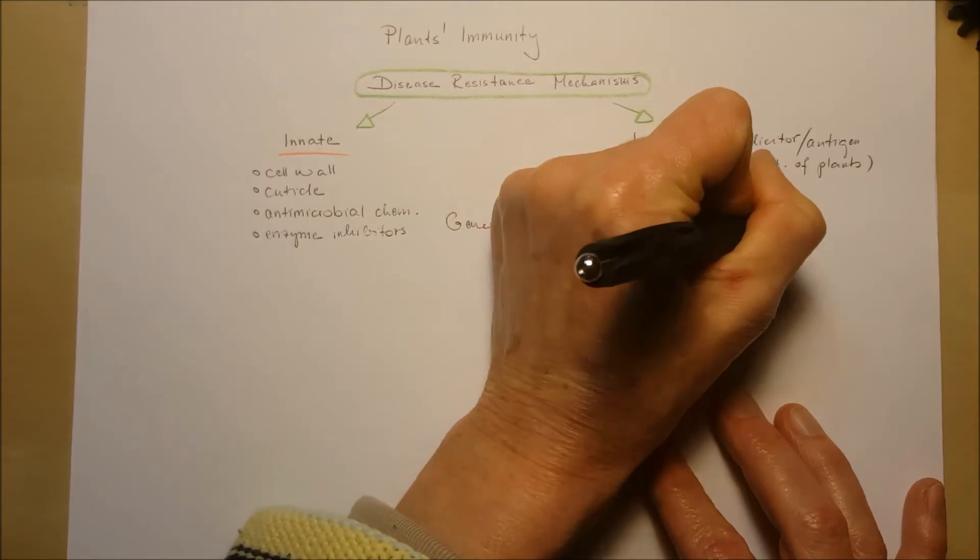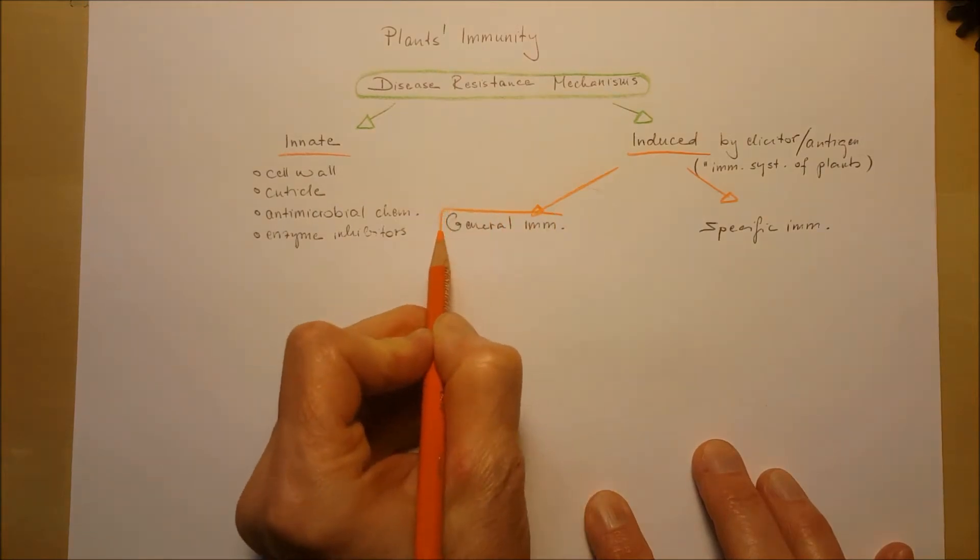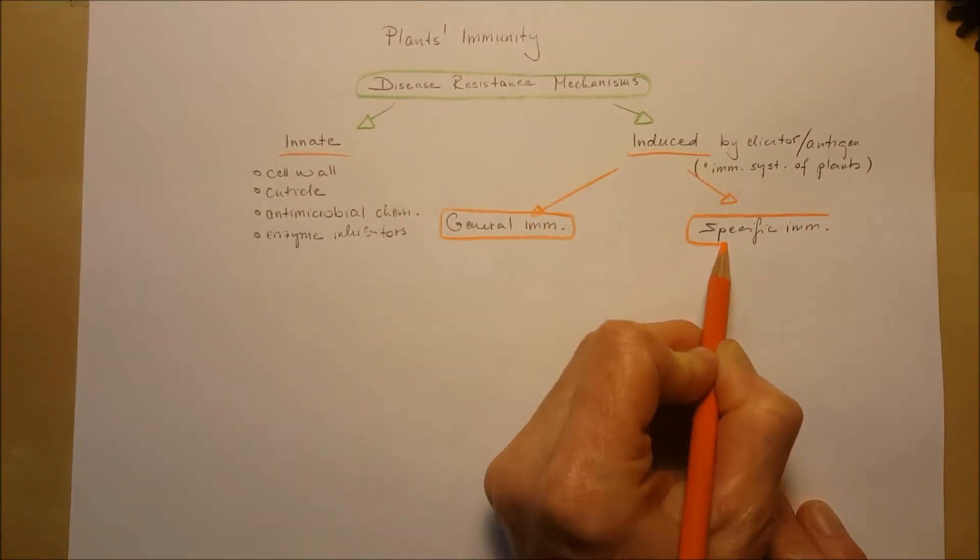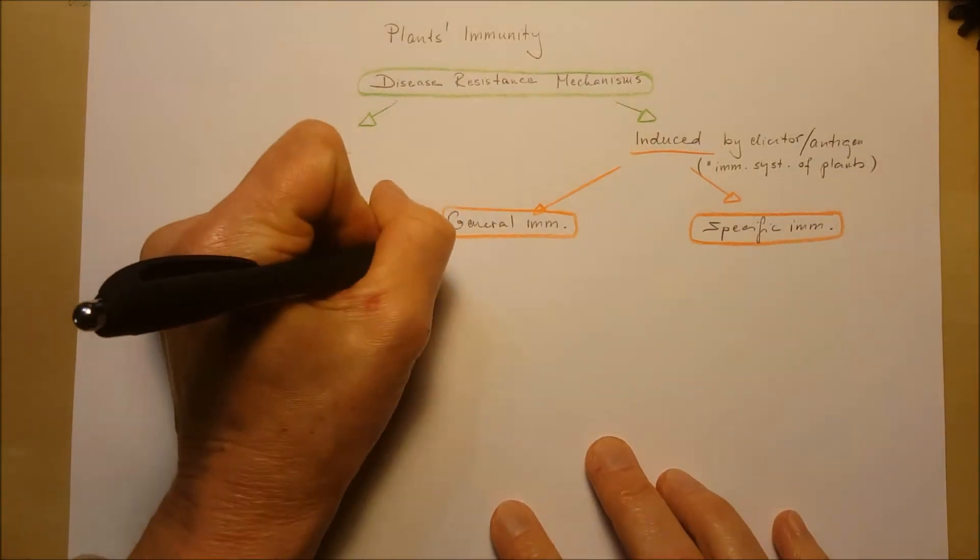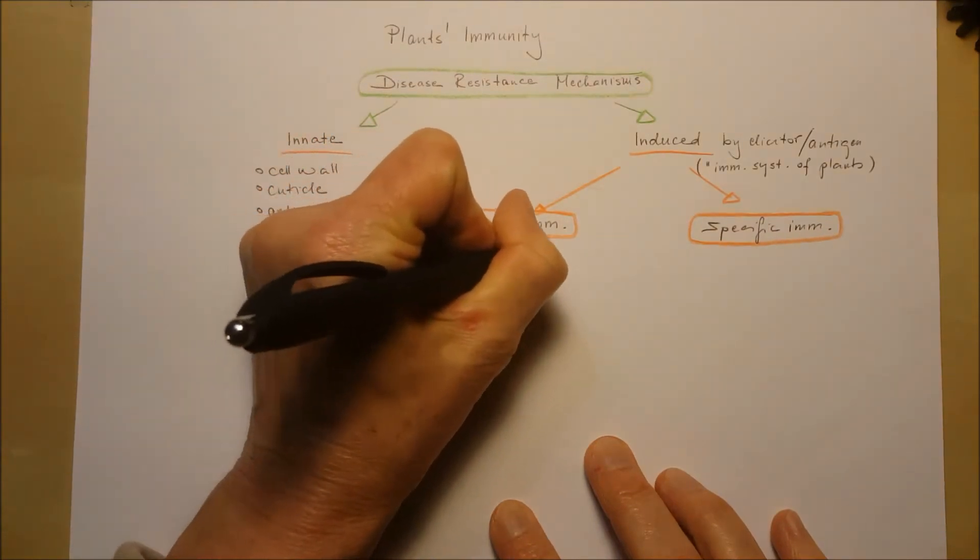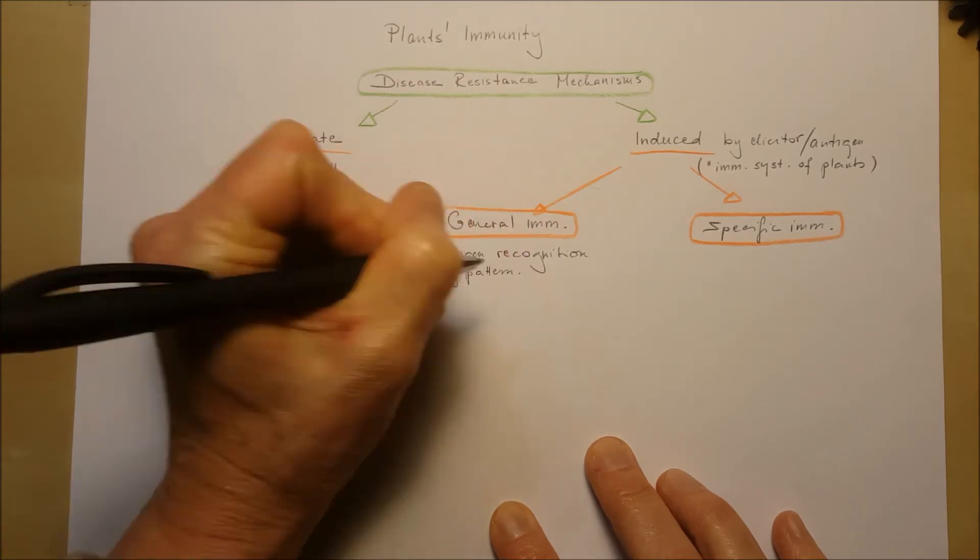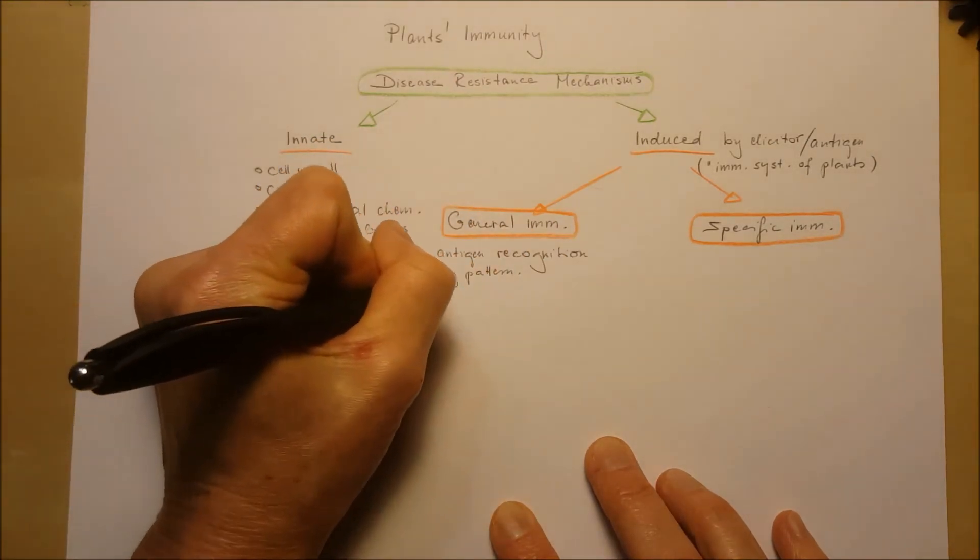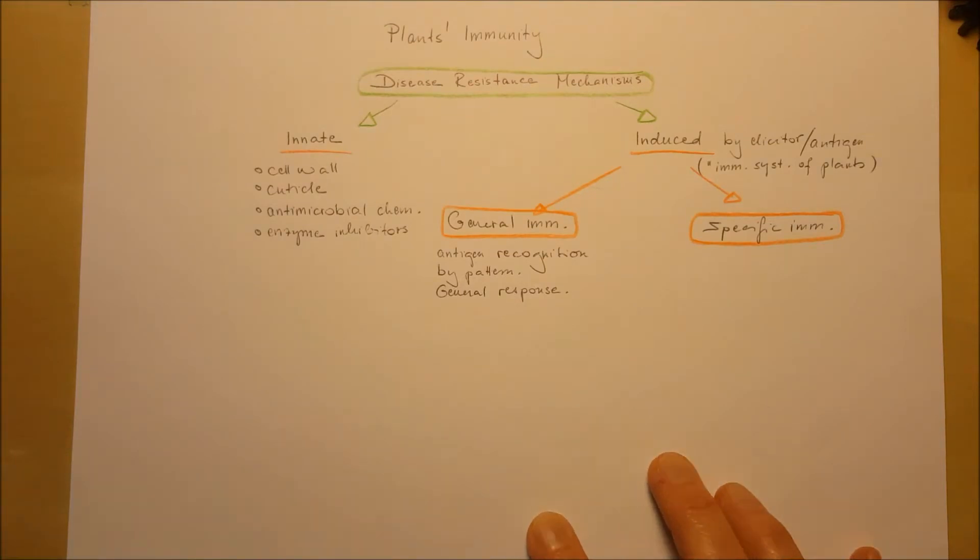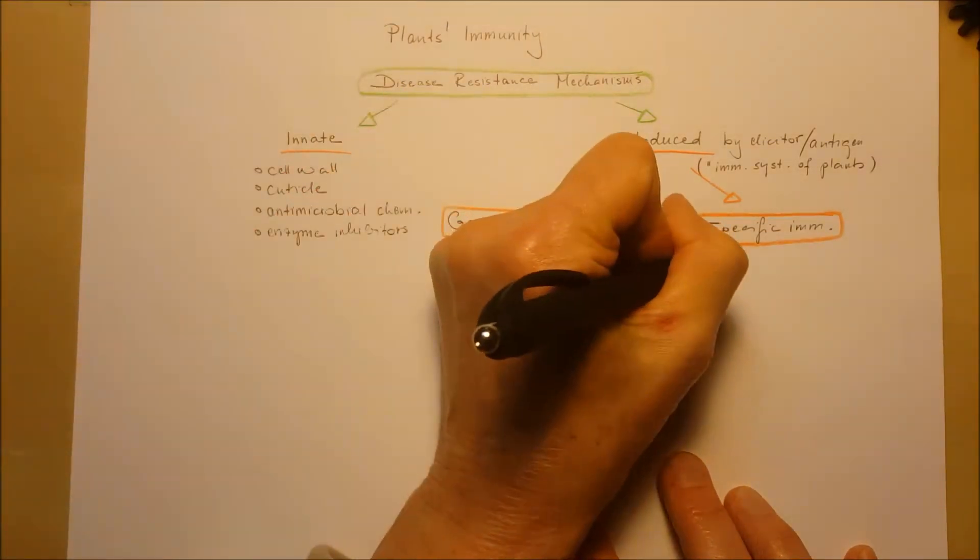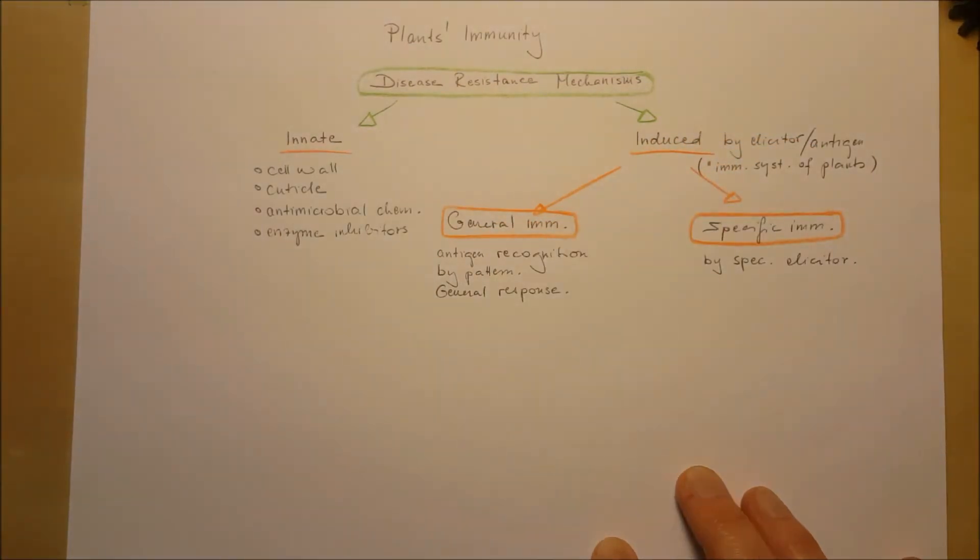One of them is general immunity, the other one is specific immunity under the induced defense response. The general immunity works with non-specific elicitors and the plant recognizes the antigen or elicitor by pattern. It's not specifically recognized, but the plant recognizes it as something that is not good for it. On the other hand, the specific immunity is triggered by a specific elicitor.